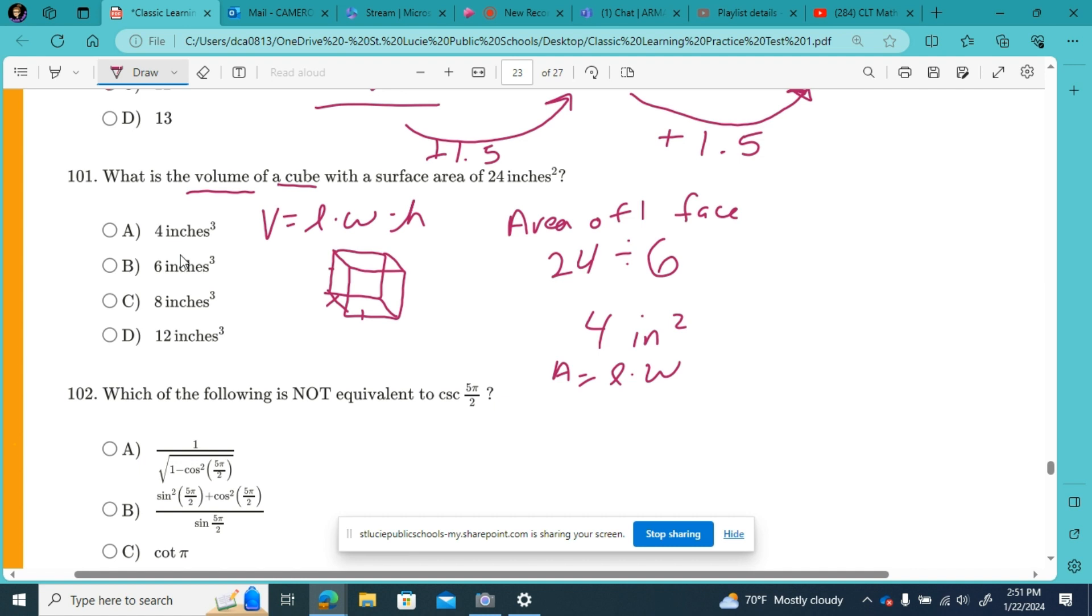So length and width are two, which means also height is two. So our volume would just be two times two times two, which would be eight cubic inches.